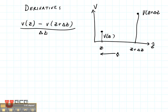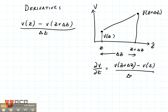The two points are Δz apart, so let's assume they are approximately linear between them. The derivative of v with respect to z would be v(z + Δz) minus v(z), all divided by Δz.